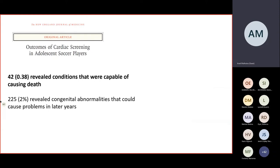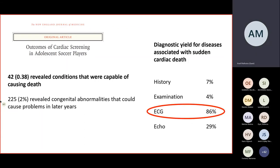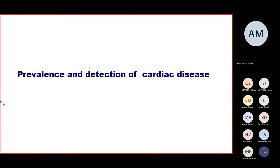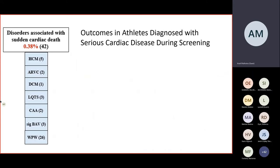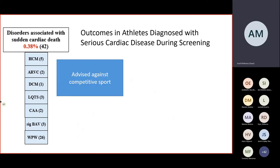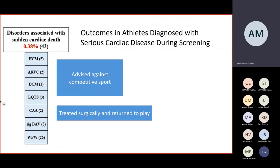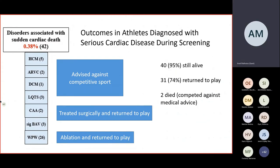42 athletes revealed conditions capable of causing sudden death and 2% revealed congenital abnormalities. The ECG was the most sensitive tool to identify these conditions, which were mainly electrical — hence the sensitivity of the echocardiogram was not as high. Looking at the prevalence and detection of cardiac disease amongst those 42 individuals, cardiomyopathies and long QT were advised against competitive sports in line with guidelines at the time. Structural and congenital problems were treated surgically and returned to play, and the vast majority of Wolf-Parkinson-White players did return to play.